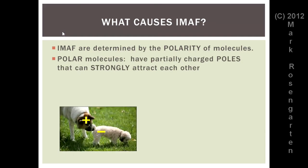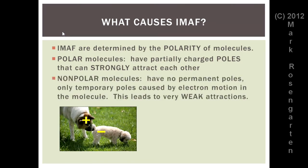For example, a dog sniffing another dog's butt. Now imagine the dog's nose being positive in charge and the other dog's butt being negative in charge. Nonpolar molecules have no permanent poles. They only have temporary poles caused by electron motion in the molecule. This will lead to very weak attractions.